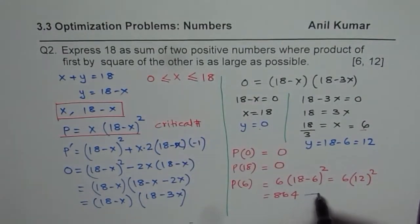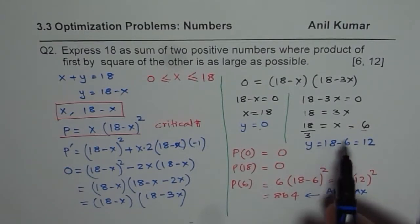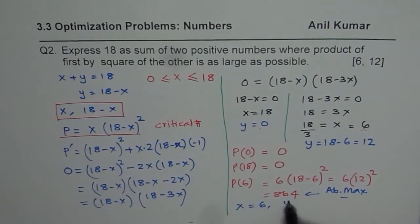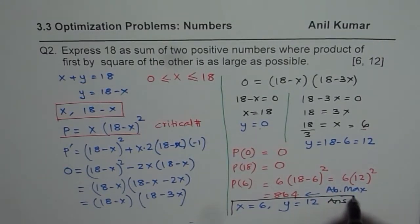So largest is this. Absolute maximum is obtained when x equals 6 and the other number y equals 12. And therefore that is our answer. So our answer is one number is 6, the other one is 12.